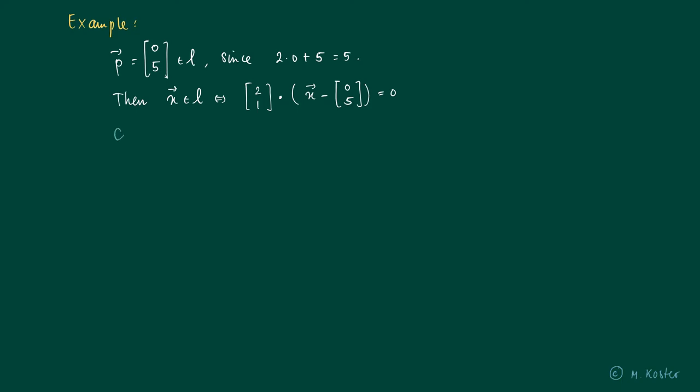Now we're just going to check if this is truly what we want to have. Well, the inner product of (2, 1) with x minus (2, 1), the inner product with (0, 5) equals 2x plus y, which are the coordinates x, y are the coordinates of x.